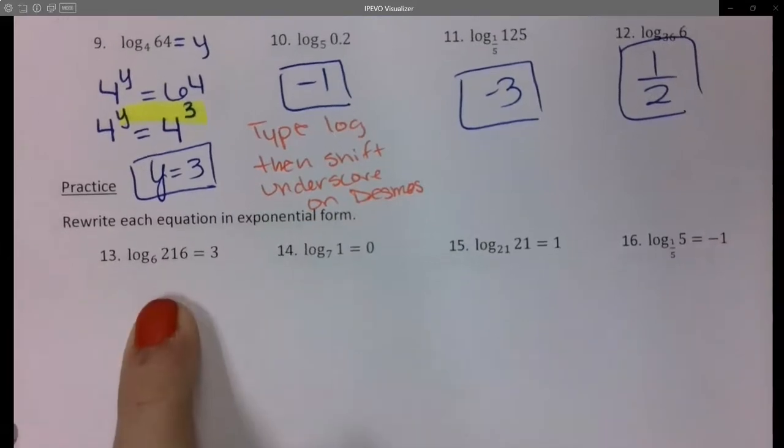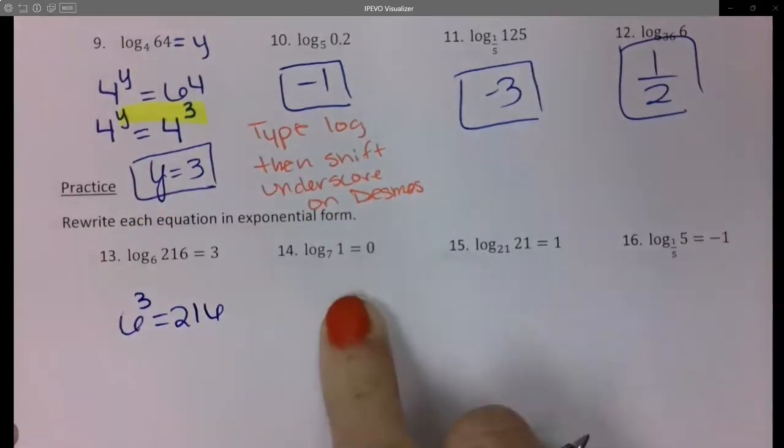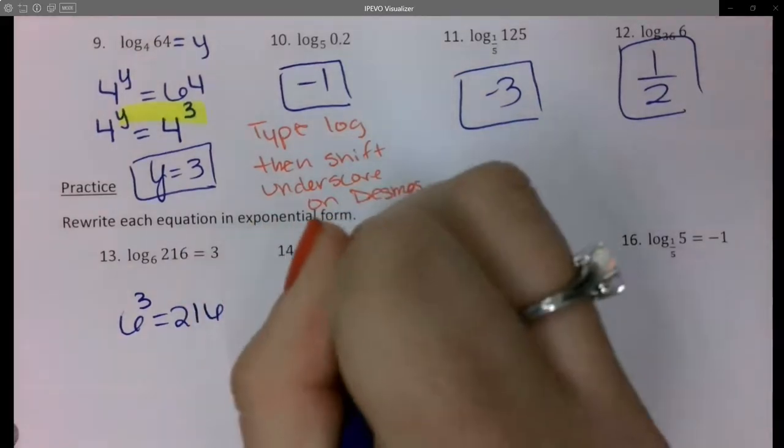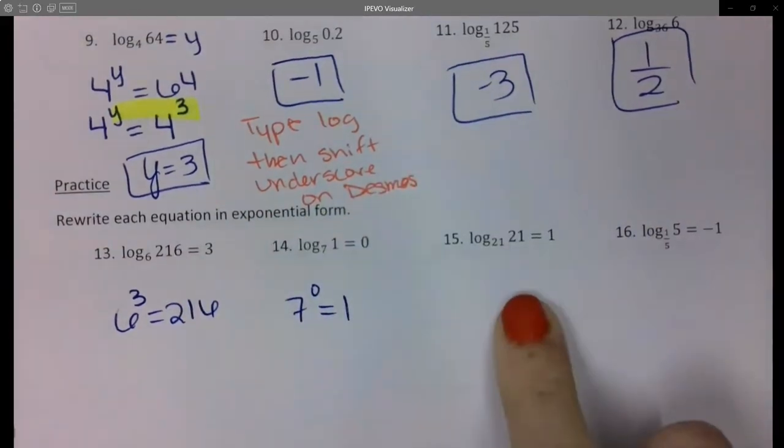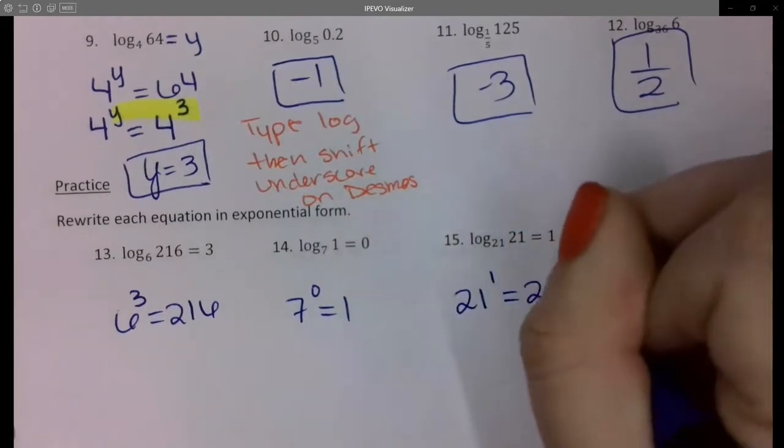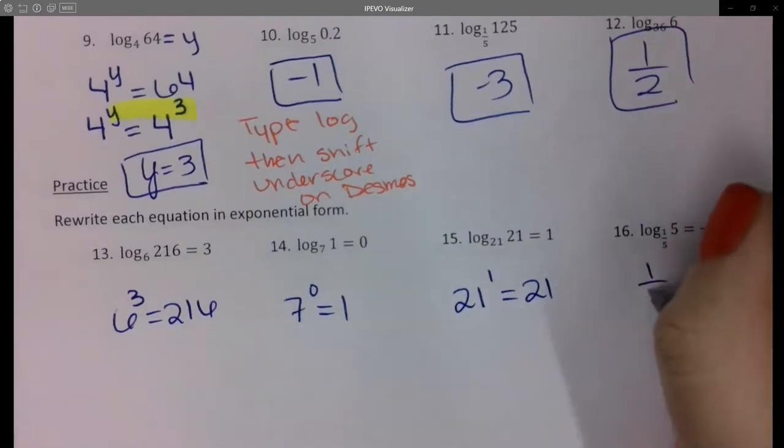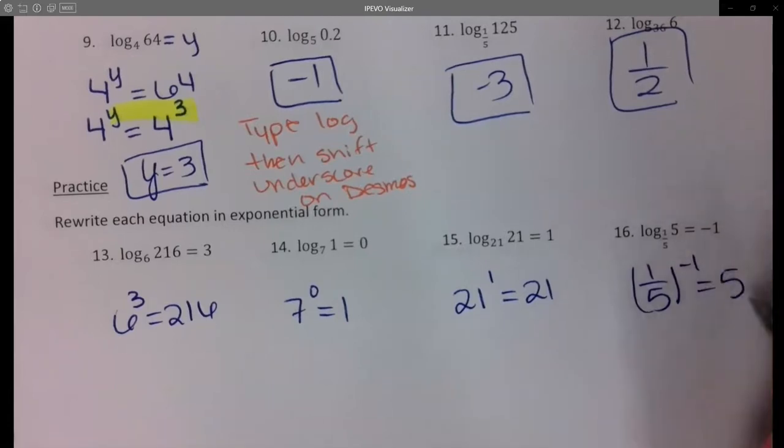Okay, so what did you guys get for number 13? Number 14? Someone other than Abigail, what did you get for number 15? Someone else, what did we get for number 16? Question on the first side.